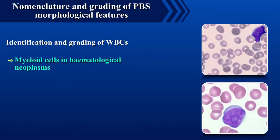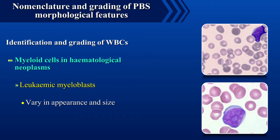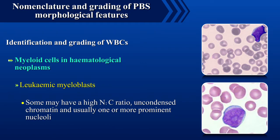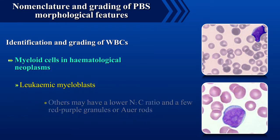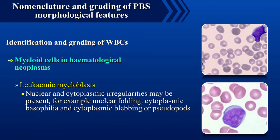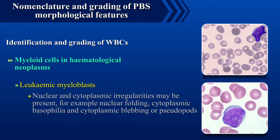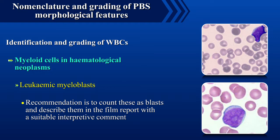Myeloid cells in hematological neoplasms. Leukemic myeloblasts vary in appearance and size — they can be large or small. Some may have a high nucleus-to-cytoplasm ratio, uncondensed chromatin, and usually one or more prominent nucleoli, while others may have a lower N:C ratio and a few red to purple granules or Auer rods. Nuclear and cytoplasmic irregularities may be present, for example nuclear folding, cytoplasmic basophilia, and cytoplasmic blebbing or pseudopods. The recommendation is to count these as blasts and describe them in the film report with a suitable interpretive comment.